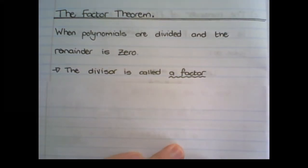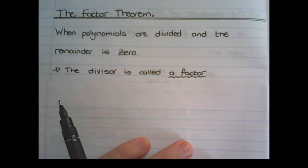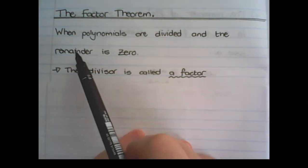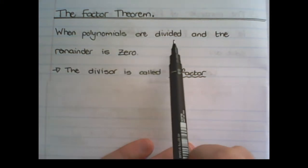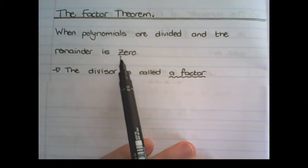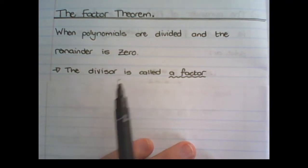We are going to discuss the factor theorem. In this theorem, we learn that when polynomials are divided and the remainder is zero, the divisor is called a factor.